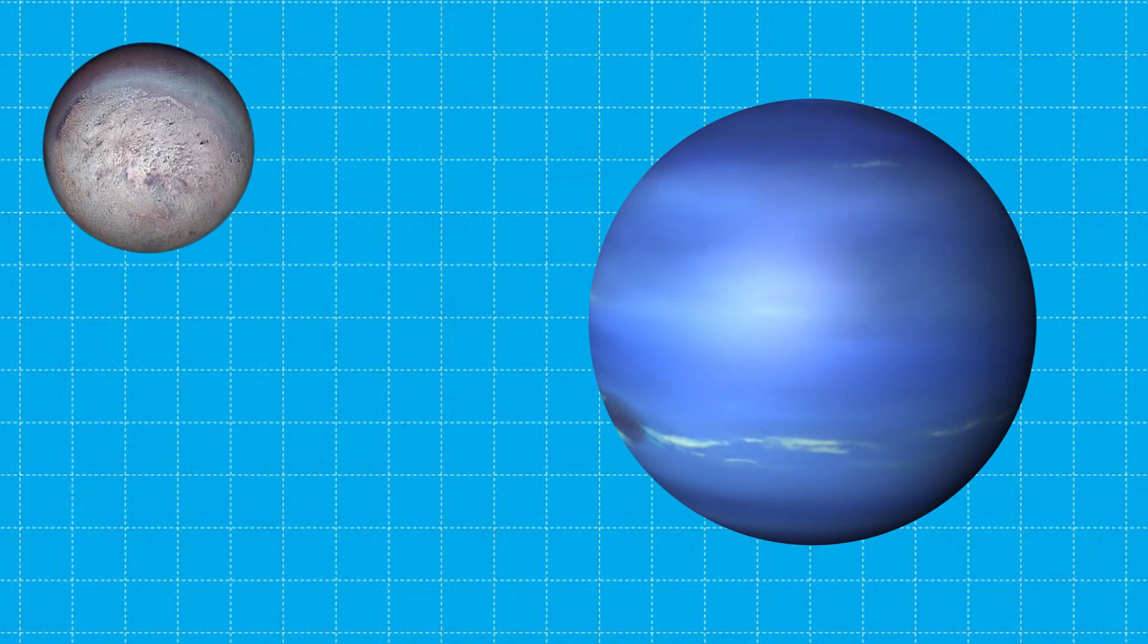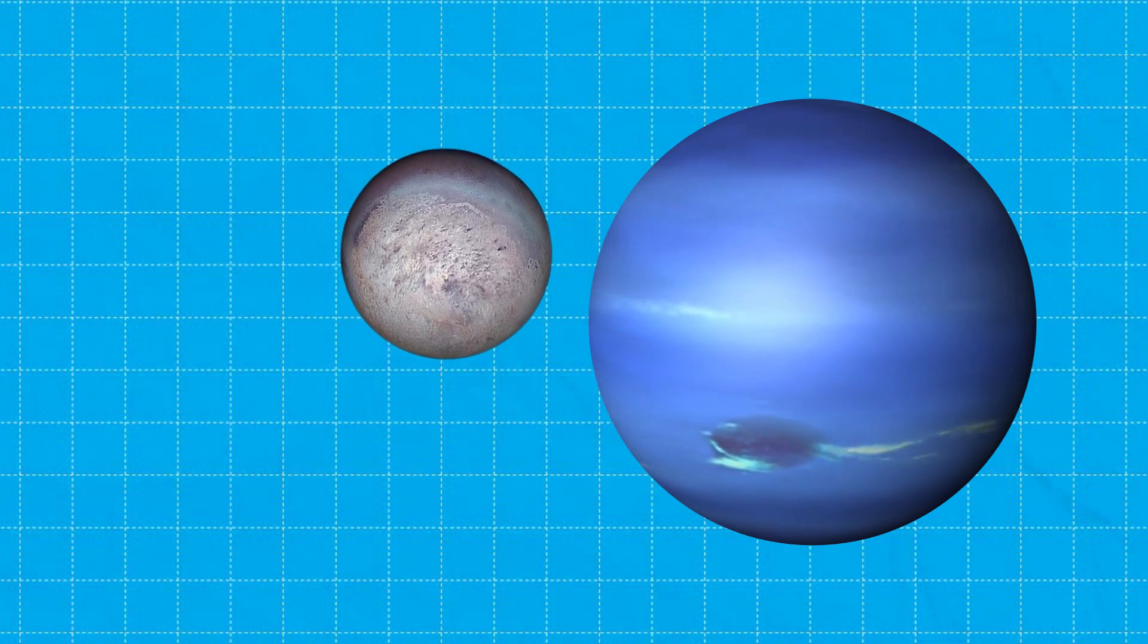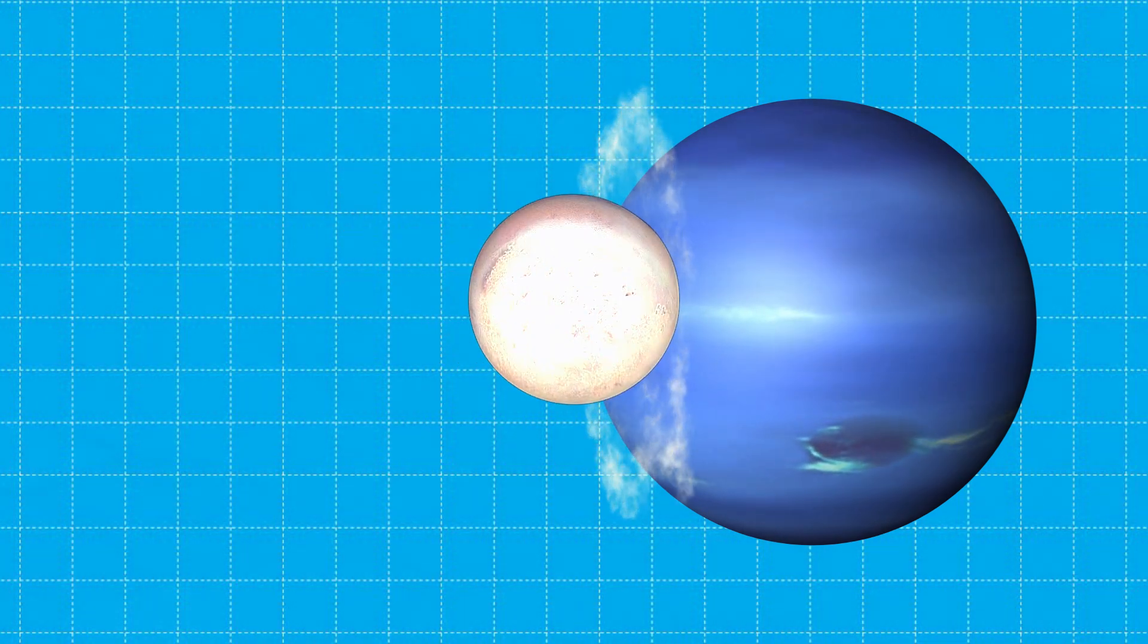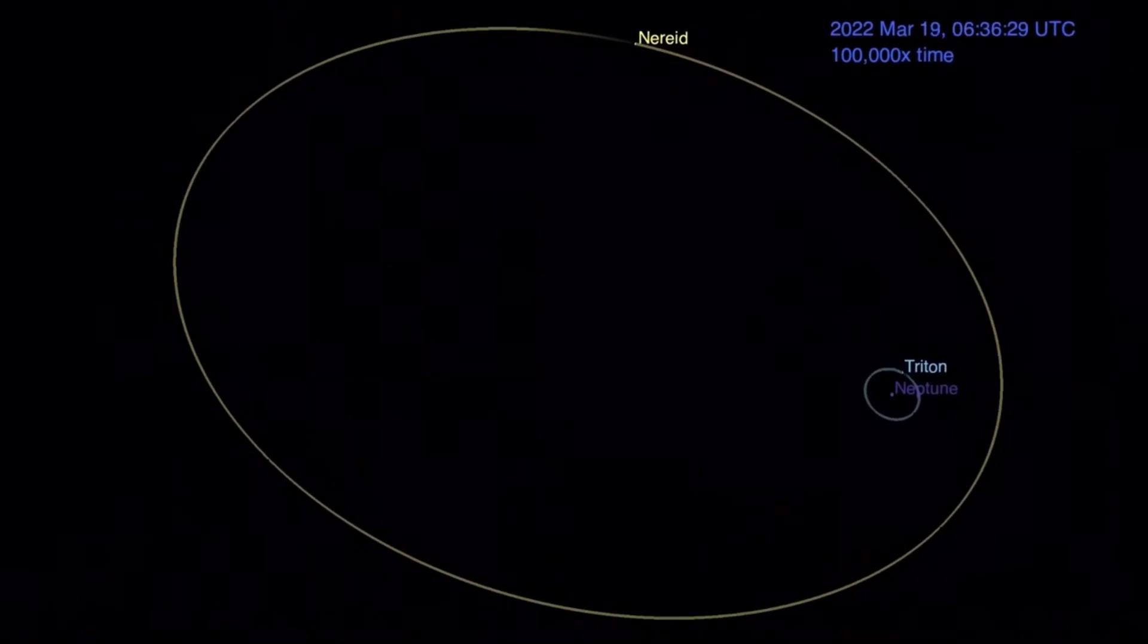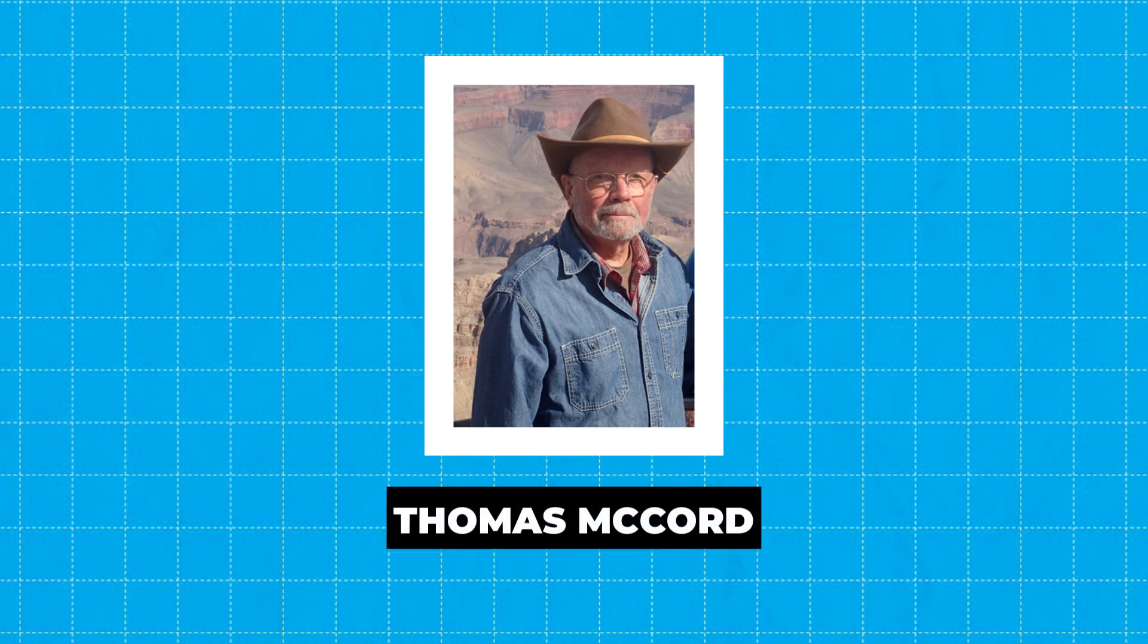Neptune's largest moon, Triton, is predicted to eventually collide with the planet and form a new ring around it in a cataclysmic collision, based on the unusual orbits of Triton and Neptune's other moon, Nereid. Analyzed by Caltech graduate student Thomas McCord in the late 1970s.